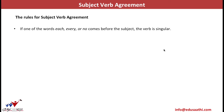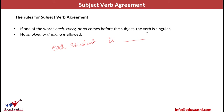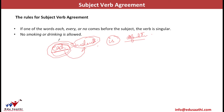The next rule: if 'each,' 'every,' or 'no' comes before a subject — even a plural subject — the verb is singular. For example, 'No smoking or drinking is allowed.' Also, 'Each student is absent.' Even though all students are being referred to, writing 'each' before the subject makes the verb singular.